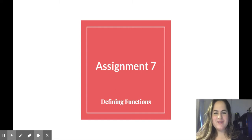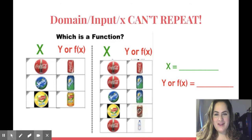Welcome back. We're going to do Assignment 7, Defining Functions. So here we have two drink machines. Now the rule for drink machines as well as in math is that you want to predict what you're going to get. You want things to be functioning properly.